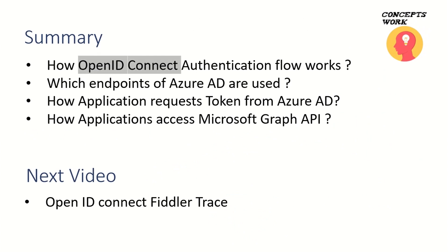That was all about how the authentication flow works in OpenID Connect and the different endpoints which can be accessed. In the next video I will be talking about the Fiddler trace with a sample application and discussing the different endpoint values in detail.